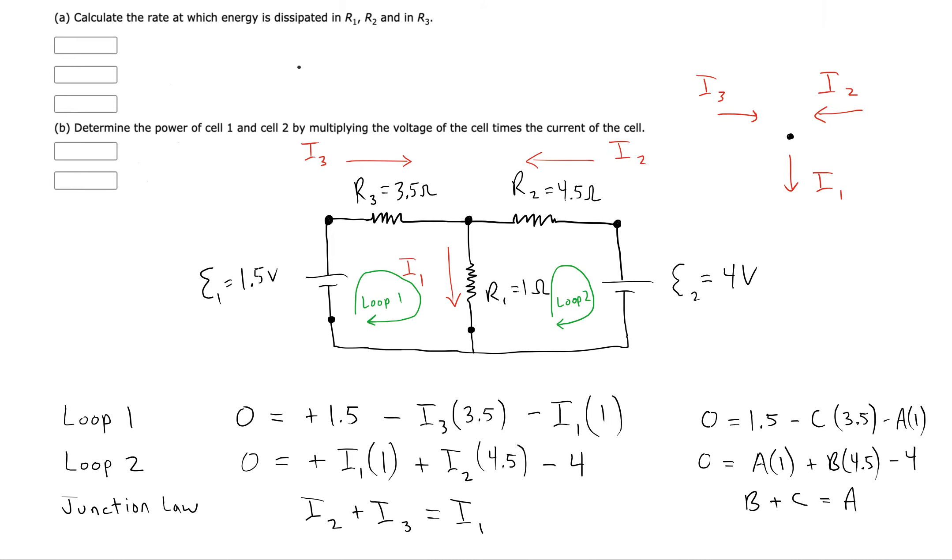This question is a little tough because it's asking, what's the rate of energy dissipation in the resistors? So we're going to want to use the formula P equals V times I. Or if we want to avoid finding the voltage, we could substitute in IR for V.